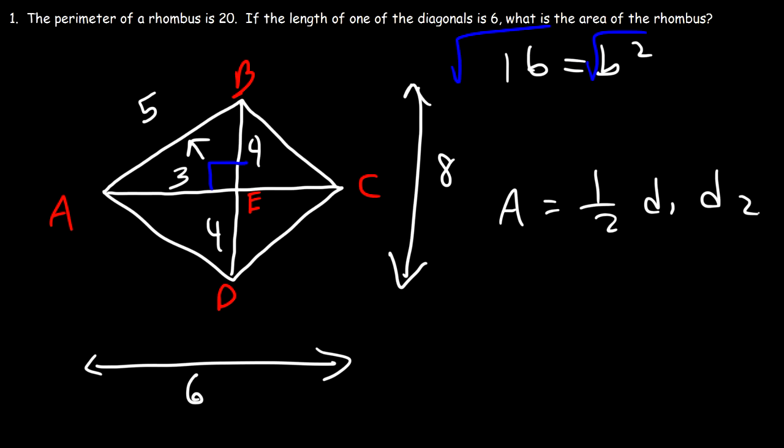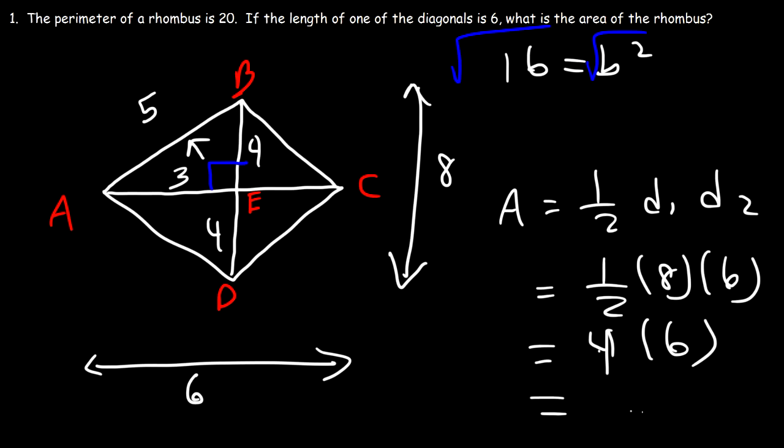Since BE is 4, ED is also 4, which means diagonal BD is 8. The area is one-half times D1 times D2: one-half times 8 times 6. Half of 8 is 4, and 4 times 6 is 24. So the area of this rhombus is 24 square units.